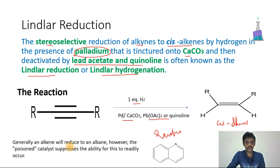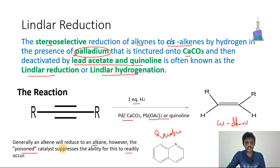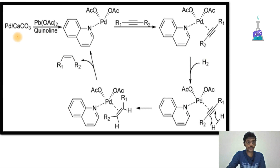Generally, an alkene would reduce further to an alkane. However, Lindlar's catalyst is a poisoned catalyst, which suppresses the ability for this to readily occur. Because the Lindlar catalyst is poisoned, the alkyne is converted into an alkene and generally not further converted into an alkane.